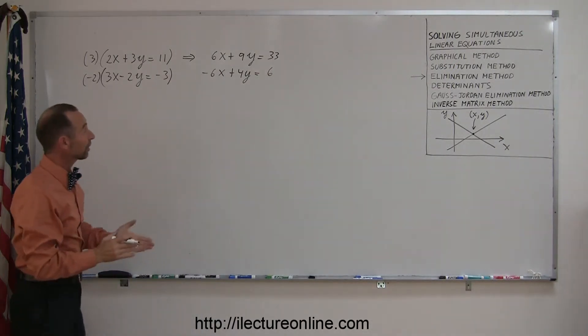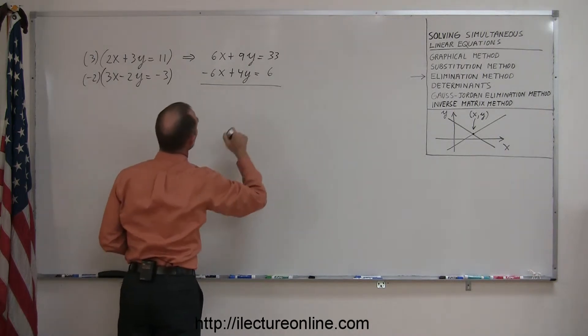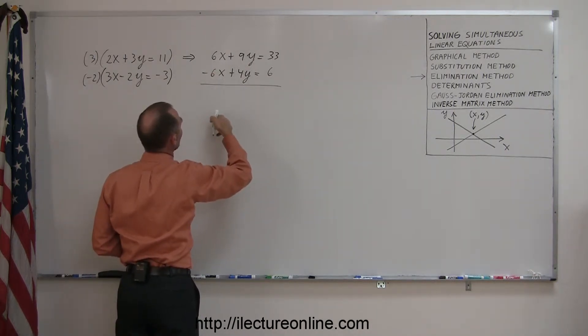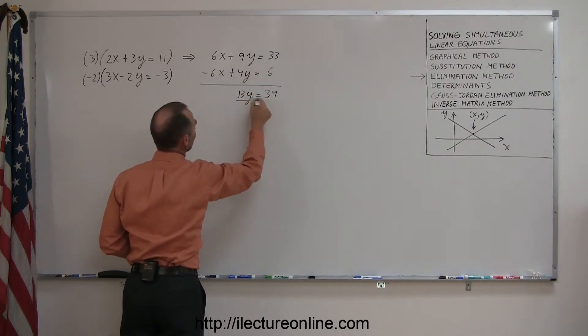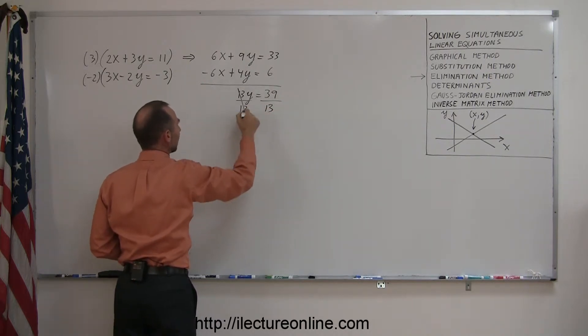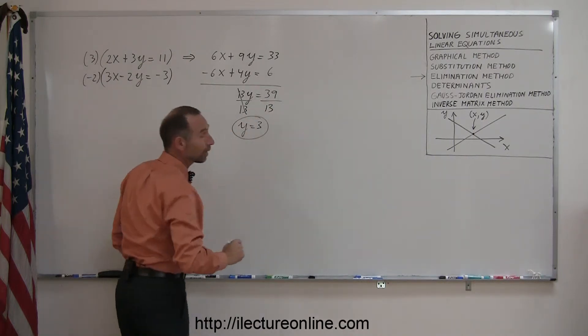Now I can see that if I add the two equations, the x's will be eliminated. So I'm going to do that. Add them together, x's are gone. 9y plus 4y is 13y, and 33 plus 6 is 39. If I then divide both sides by the numerical coefficient in front of y, I get y equals, and 13 fits exactly 3 times into 39. So y equals 3.